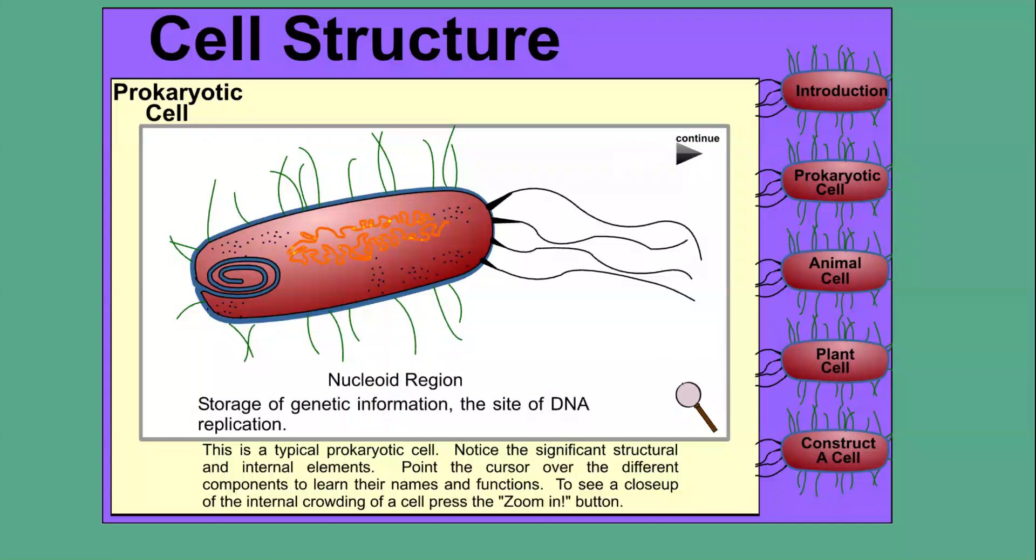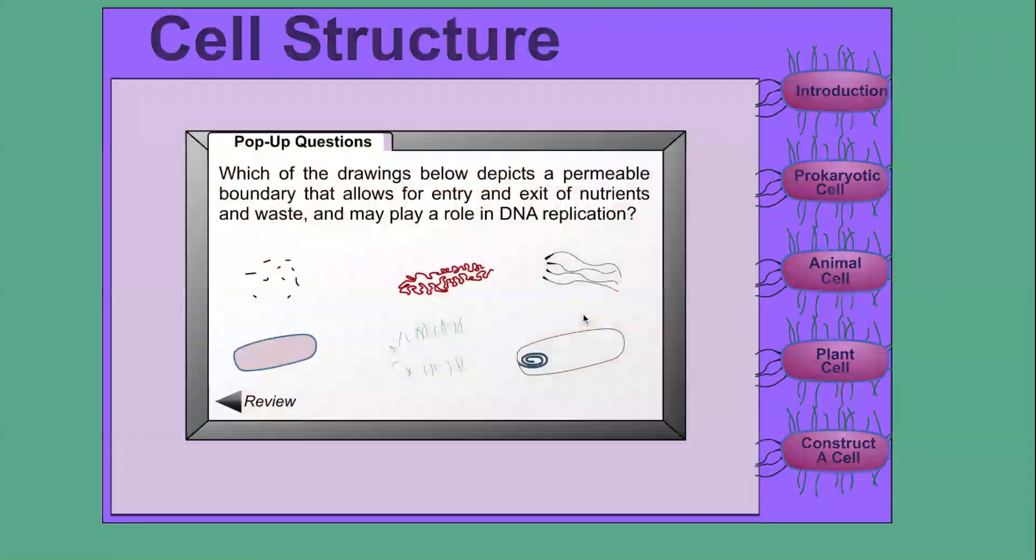For example, you can zoom in or continue whatever you want. And so you will see the pop-up questions here where they ask you and you try to finish. For example, they ask about which of the drawings below depicts a permeable boundary that allows for entry and exit of nutrients and waste.